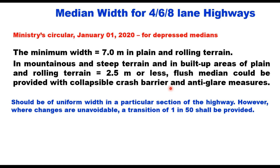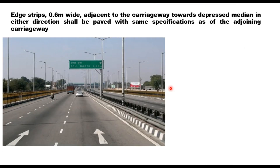The next point is the edge strip. This edge strip, which is 0.6 meter wide adjacent to the carriageway towards the depressed median in each direction of the carriageway, shall be paved with the same specification as the adjoining carriageway.